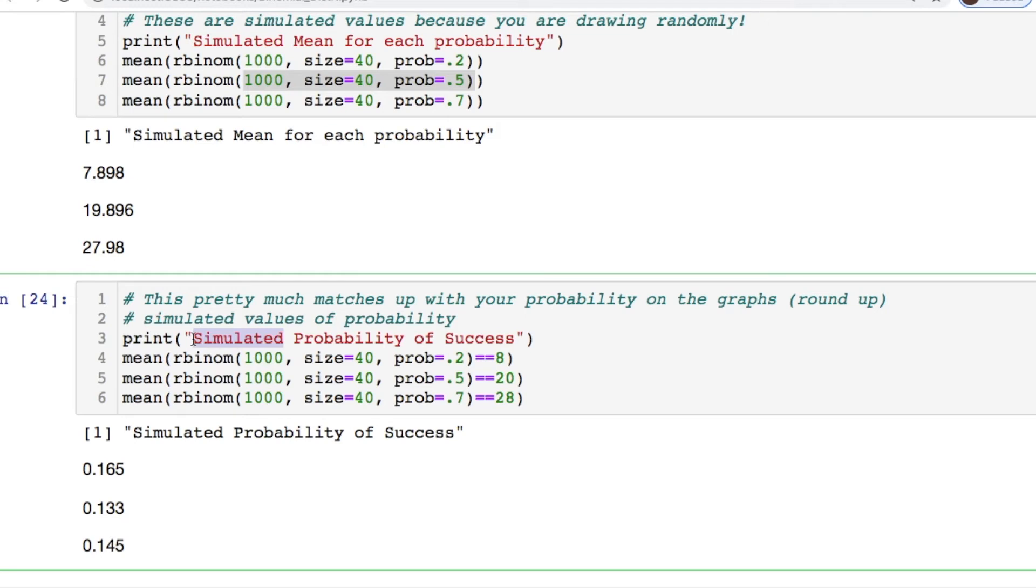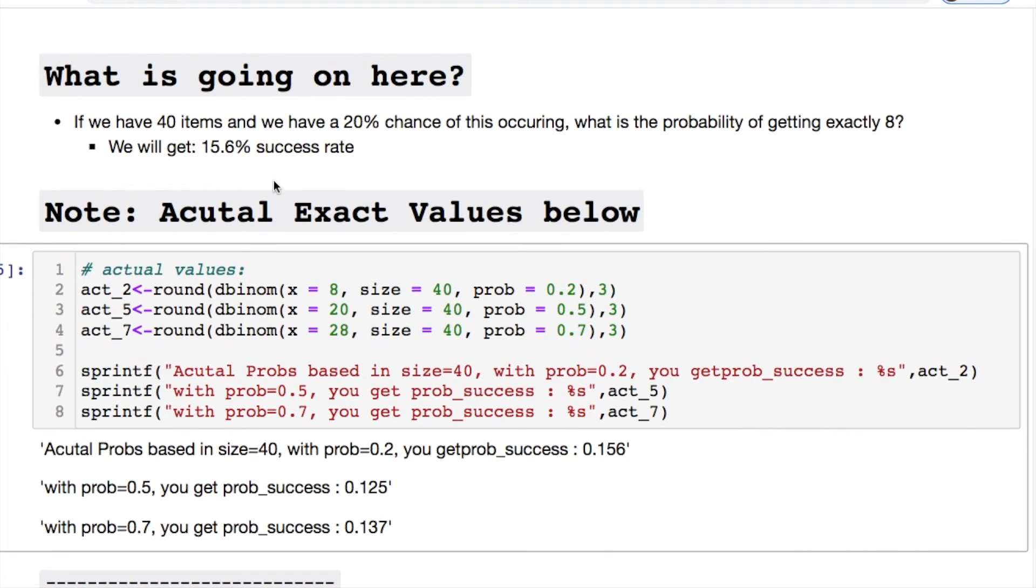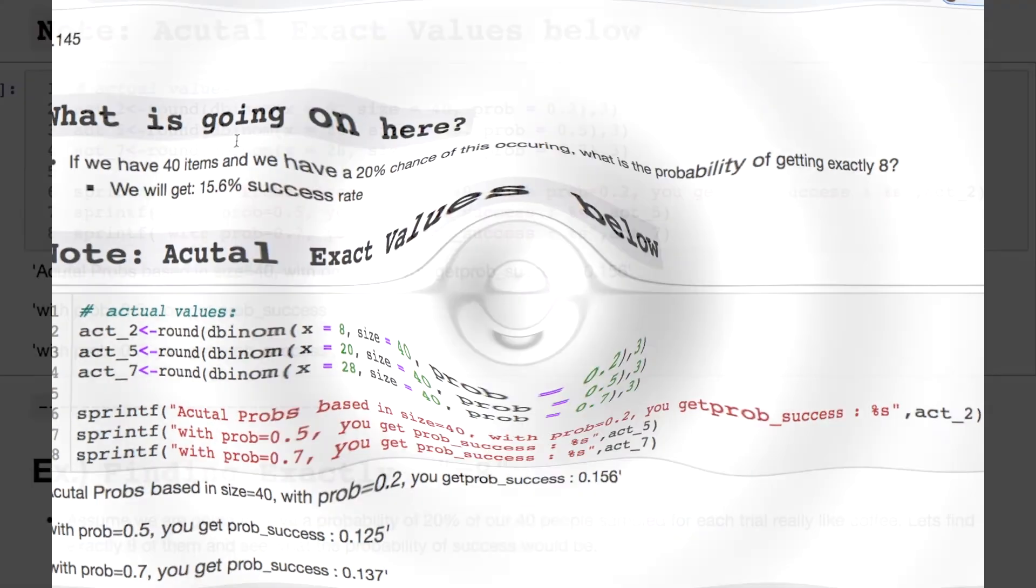Now notice that these are the simulated values because these were relevant to the randomness that we created above. But we can also get the exact values from these as well. Here's the actual values that we're going to look at real quick. But notice something, what is really going on here? For instance if we had 40 items that had a 20 percent chance of occurring, what was the probability of exactly getting 8? We ended up with 15.6 percent.